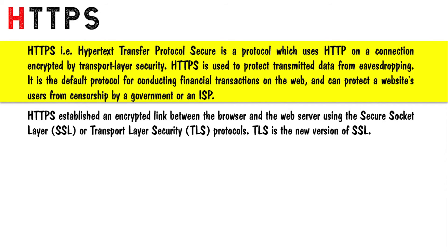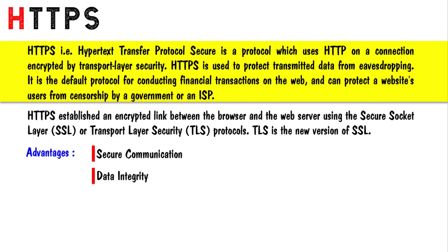TLS is the new version of SSL. Advantages of HTTPS: HTTPS makes a secure connection by establishing an encrypted link between the browser and the server or any two systems. HTTPS provides data integrity by encrypting the data, so even if hackers manage to trap the data they cannot read or modify it. HTTPS also protects the privacy and security of website users by preventing hackers from passively listening to communication between the browser and the server.